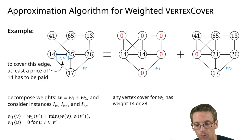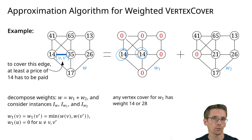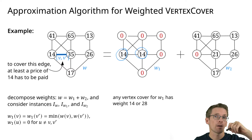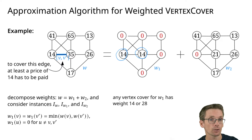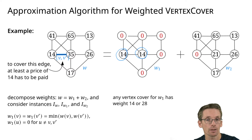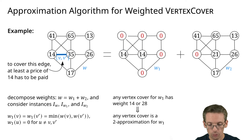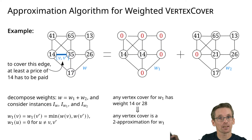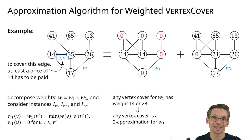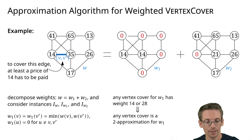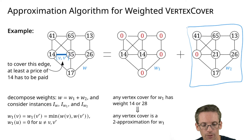Why? Because we must select at least one of those vertices, giving a cost of at least 14. But even if we select all vertices, we still only get a cost of 28. This means no matter which vertex cover we pick — as long as it's valid — it is a 2-approximation, since either it has weight 14 (optimal) or 28 (still within factor 2).